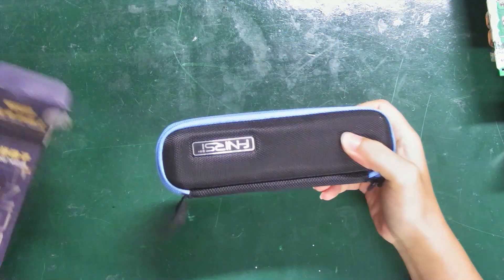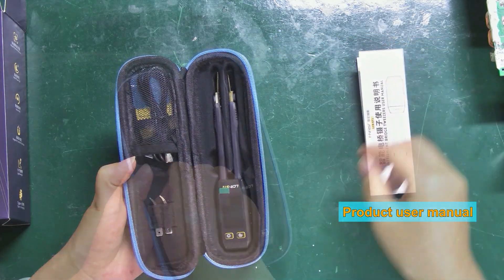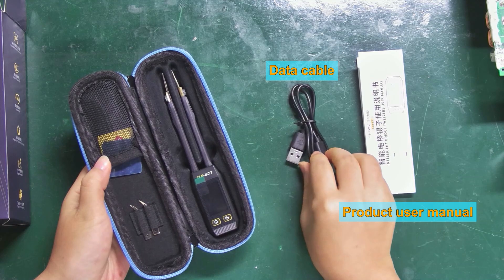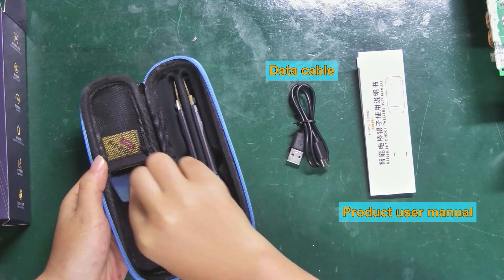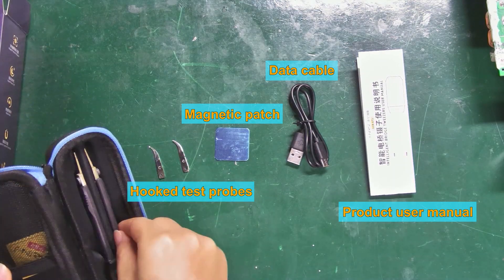Open the packaging box, and here's the product user manual. The included kits are a data cable, the magnetic patch, replaceable hooked test probes, and the main unit.